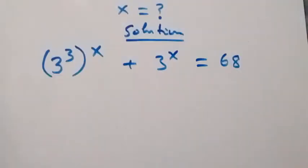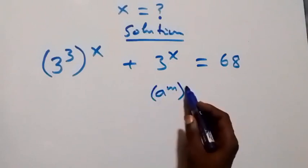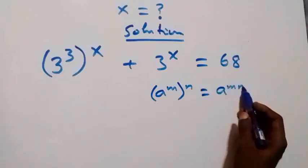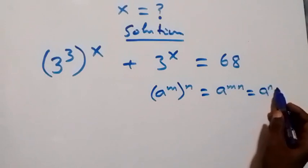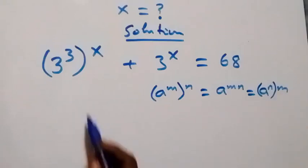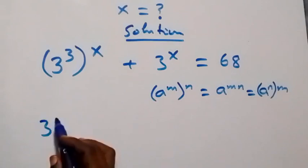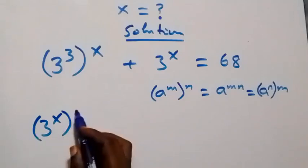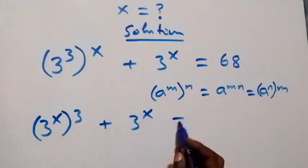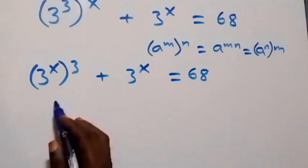When we apply the law of indices — from a raised to power m raised to power n, which equals a raised to power mn, and can also be written as a raised to power n raised to power m — it implies we can interchange the powers, and this becomes 3 raised to power x, then raised to power 3, plus 3 raised to power x, equals 68.